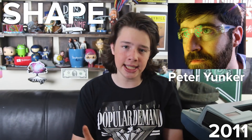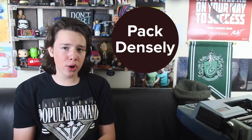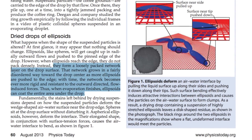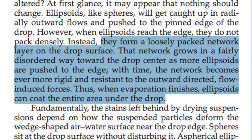Coffee particles are circular in shape, meaning they pack really densely at the edge of the drop. However, ellipsoid particles don't. From a 2013 write-up on the phenomenon: ellipsoids form a loosely packed network layer on the drop's surface. That network grows in a fairly disordered way towards the drop's center, as more ellipsoids are pushed to the edge. With time, the network becomes even more rigid and resistant to the outward-directed flow-induced forces. Thus, when evaporation finishes, ellipsoids can coat the entire area under the drop. So to counteract the coffee ring effect, just add some ellipsoid particles to your solution.